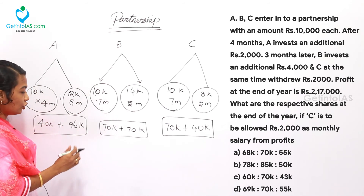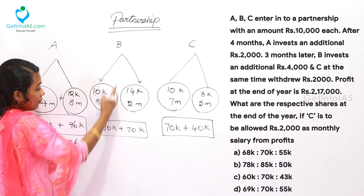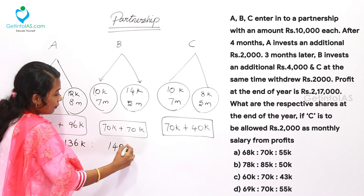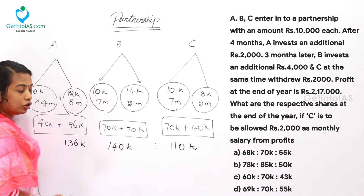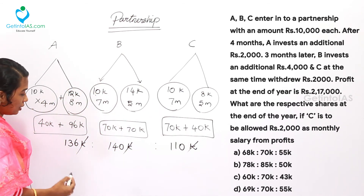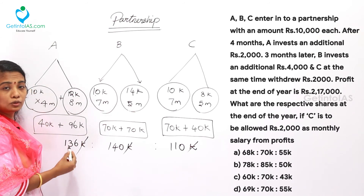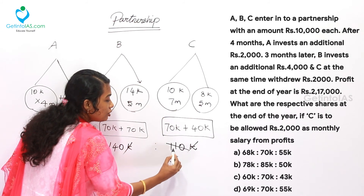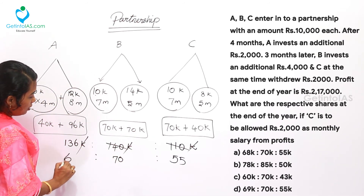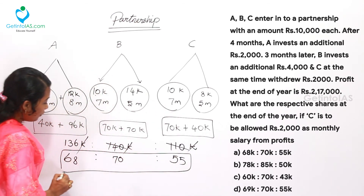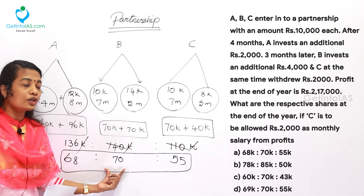Adding up: A = 136K, B = 140K, C = 110K. Dividing all by 2: the ratio of A to B to C is 68 to 70 to 55. This is the investment-based profit ratio.